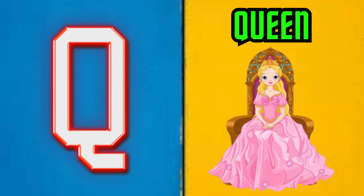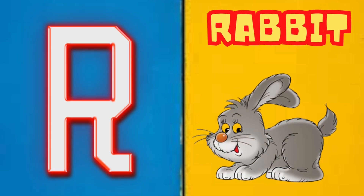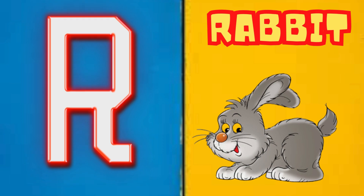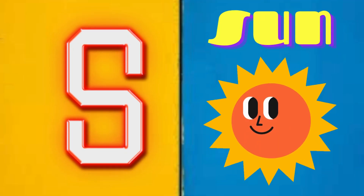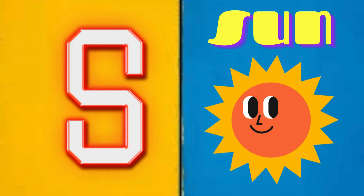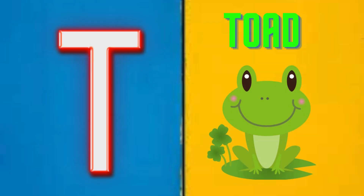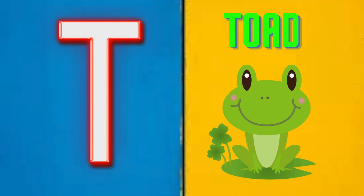Q is for Queen, Q-Q-Queen. R is for Rabbit, R-R-R-Rabbit. S is for Sun, S-S-Sun. T is for Toad, T-T-Toad.